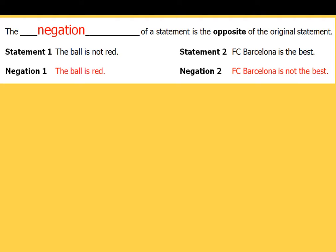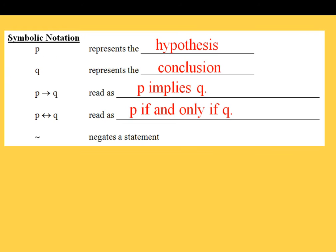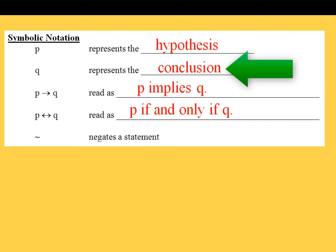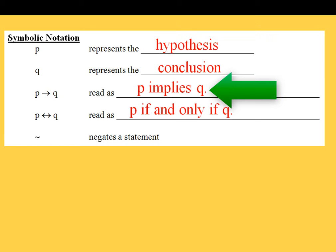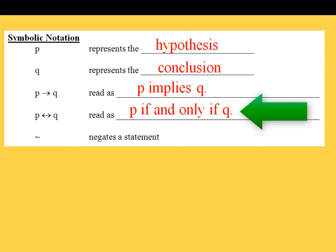We're going to be using symbolic notation quite a bit. P represents the hypothesis, q represents the conclusion. We have an arrow symbol between p and q, and when we read that we say 'p implies q.' There's also a double-arrow symbol — when we see that we use the key phrase 'if and only if,' which is used for a biconditional — more on that in a little bit.